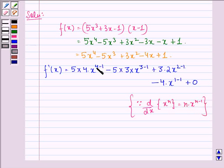In the first case n is 4, in the second n is 3, in the third n is 2, in the fourth n is 1, and since the last term is a constant, the derivative of a constant is 0, so we get a 0 in the end.